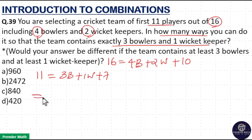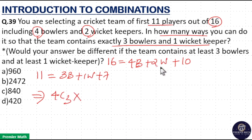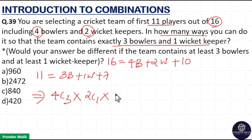This can be done in: 3 bowlers selected from 4 bowlers in 4C3 ways, 1 wicket keeper selected from 2 available wicket keepers in 2C1 ways, and the 7 other players selected from 10 other players in 10C7 ways, because this is the availability.